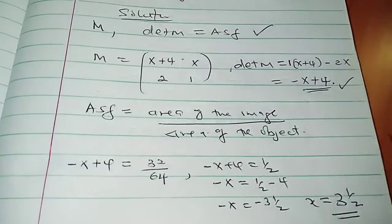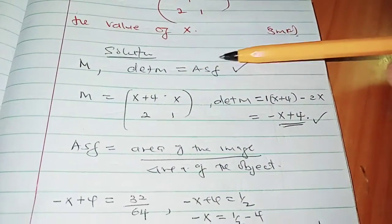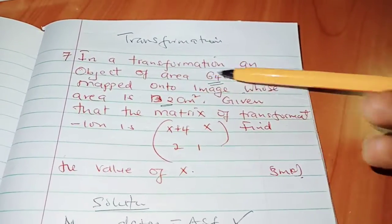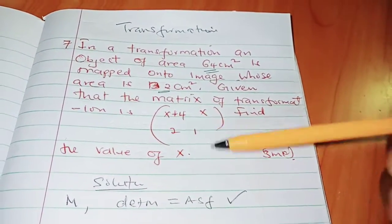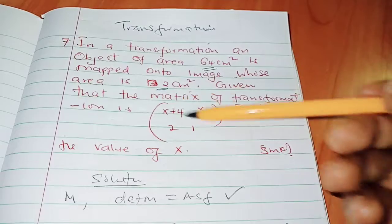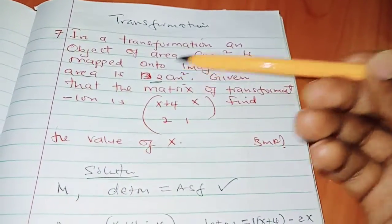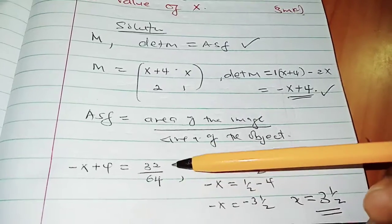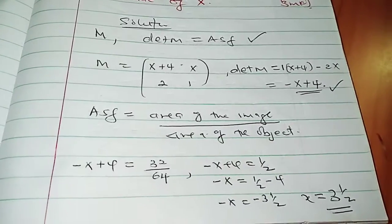So this topic of transformation, you need to remember this fact that determinant of a matrix of transformation equals the area scale factor, where the object is mapped onto an image by a certain matrix of transformation. So you determine the determinant of that matrix, and then you equate it to the area scale factor, which in this case is 32 out of 64, which is 1/2. And eventually you get to solve that linear equation that is formed when you equate the two. And that's how it's done. Thank you.